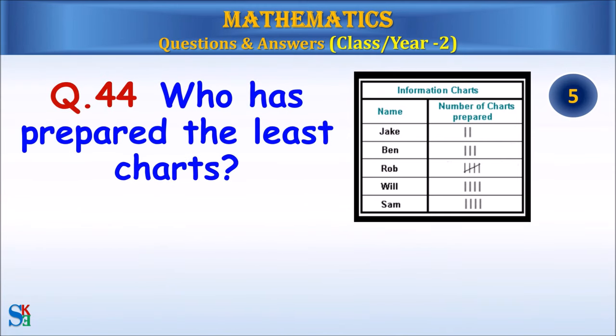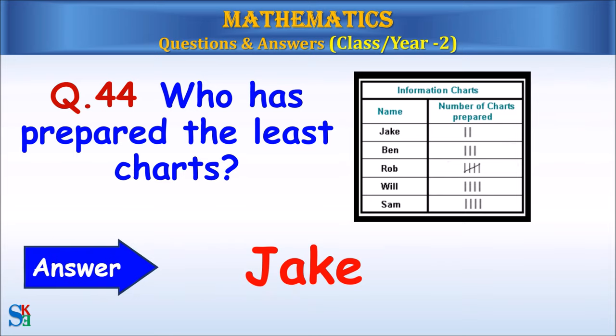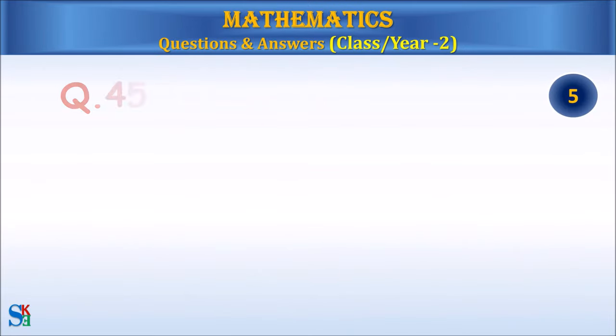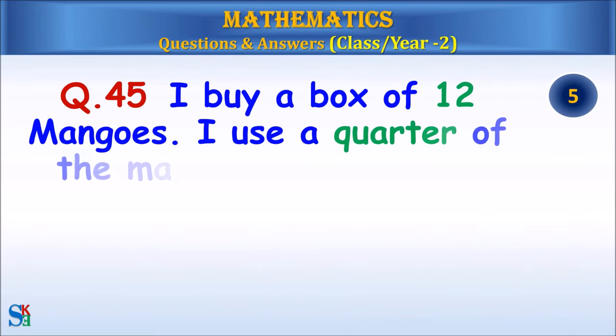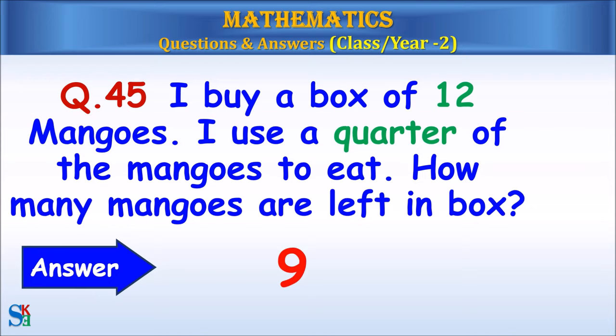Question 44: Who has prepared the least charts? Answer: Jake. Question 45: I buy a box of 12 mangoes. I use a quarter of the mangoes. How many mangoes are left in the box? Answer: 9.